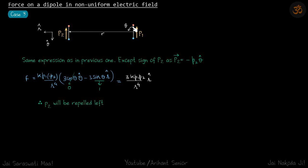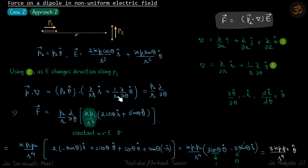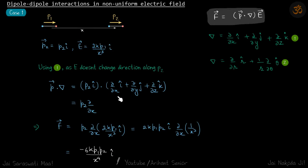In this case θ = 90°, so the cosθ term becomes zero and sinθ becomes 1. Minus times minus gives plus, and our answer is 3k·p1·p2 / r⁴ r-cap. Be careful: here r-cap points to the left, so this force is repulsive — p2 is being pushed away, therefore p2 is repelled.